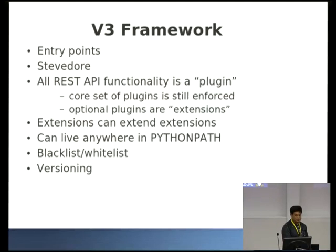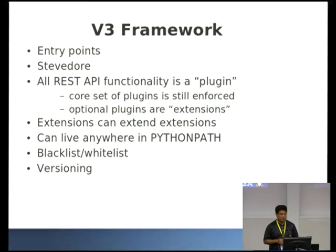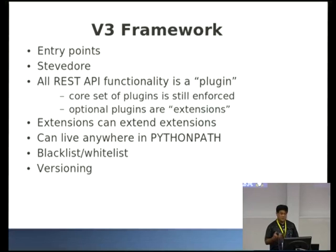Part of the cleanup was to rework the whole framework used to load extensions. So instead of a custom plug-in loader, we started using entry points via Stevedore, which was originally for Ceilometer and is being adopted by more and more OpenStack projects. It makes a really simple interface for loading plug-ins. In the Nova V3 API, everything is technically a plug-in — all the API code is a plug-in. The core set of plug-ins are still enforced; there's a subset that always has to be loaded or the Nova API will refuse to start, and the optional plug-ins are called extensions.